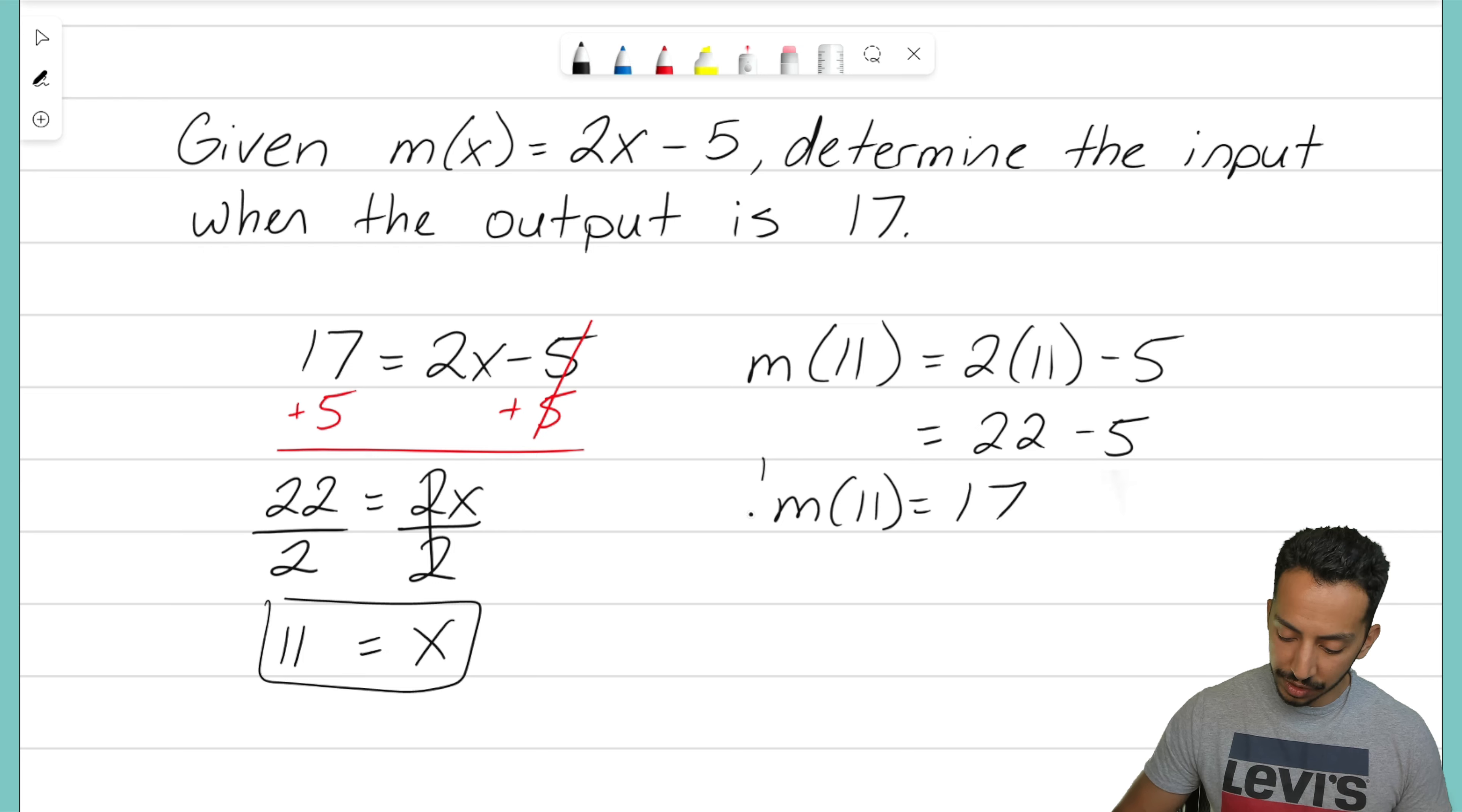This is all the proof in the world that when our input is 11 our output is 17. Remember you can always check your work after you solve for something just to make sure you are correct. It's that math magician and I'll see you on the next video.